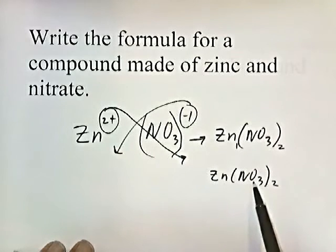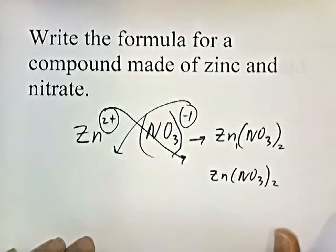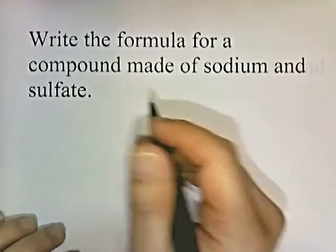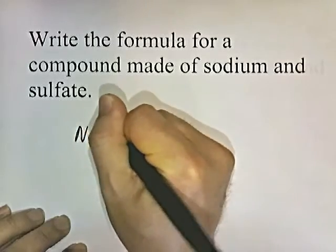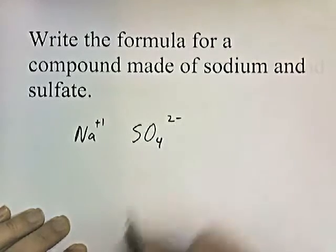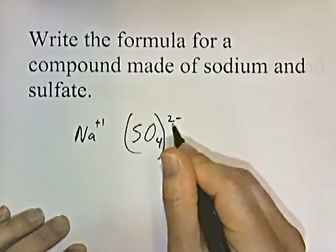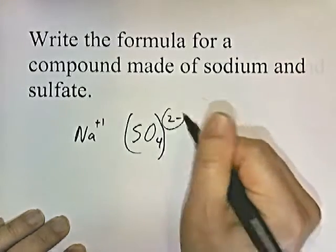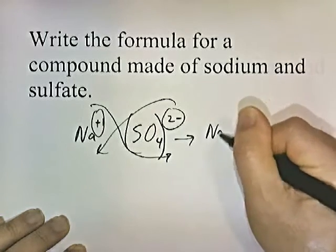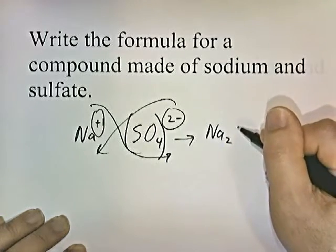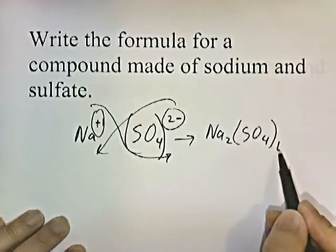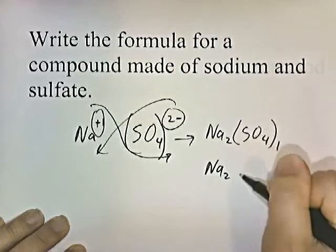For a compound made of sodium and sulfate: sodium is a group one element with a plus one charge. Sulfate is SO4 with a negative two charge. Put parentheses around the polyatomic with the charge outside, criss-cross the numbers. The result is Na2SO4, with only one sulfate so no subscript is needed on the sulfate.